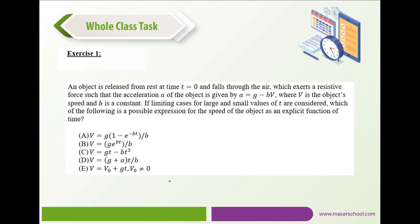Exercise 1: An object is released from rest at T equals 0 and falls through air which exerts a resistive force such that the acceleration a equals g minus bv, where v is the object's speed and b is a constant. Considering limiting cases for large and small values of T, which of the following is a possible expression for the speed as an explicit function of time? The correct answer is A, because for such dynamical systems the velocity expression is a constant multiplied by 1 minus e to the power minus bt.